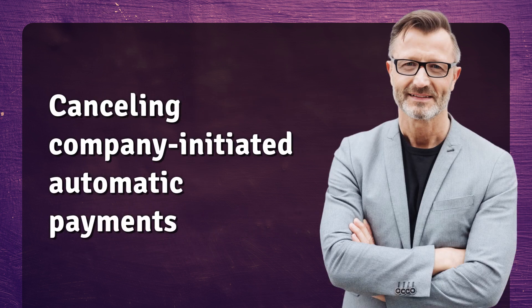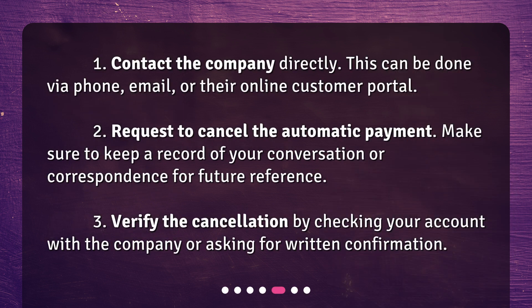Canceling company-initiated automatic payments. First, contact the company directly — this can be done via phone, email, or their online customer portal. Second, request to cancel the automatic payment, and make sure to keep a record of your conversation or correspondence for future reference. Third, verify the cancellation by checking your account with the company or asking for written confirmation.